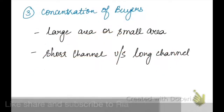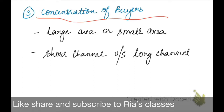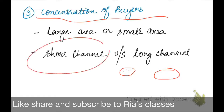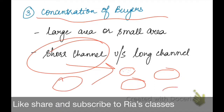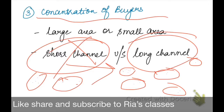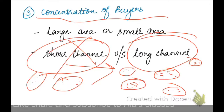Next is concentration of buyers. Again, if our buyers are concentrated in a small or short area, then our producer or distributor will use a short channel to reach the customer. But if the target audience is located in different parts of the country — spread across distant places — then a short channel is not feasible at all. In that case, we obviously need to use a long channel. So the concentration of our buyers in terms of area also determines which type of channel we use.